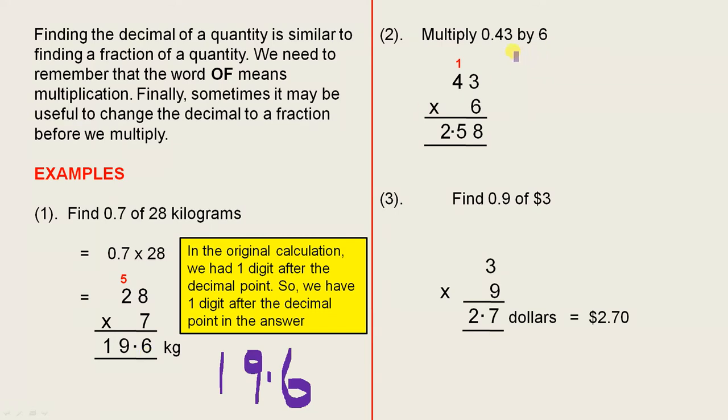Let's see how it works here. We're multiplying 0.43 by 6, so 43 times 6. 6 threes are 18, trade the 1. 6 fours are 24 plus 1 is 25. So we ended up with 258.